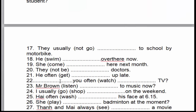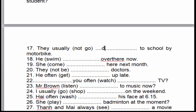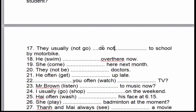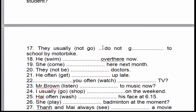Câu số 17: 'They usually don't go to school by motorbike.' Họ thường không đi đến trường bằng xe máy. 'Usually' là dấu hiệu nhận biết của thì hiện tại đơn — thể phủ định. Chủ ngữ là 'they' số nhiều, cho nên chúng ta sử dụng trợ động từ 'do', và trong trường hợp này là 'don't'. Động từ để nguyên mẫu.